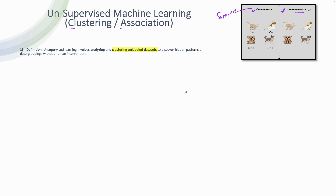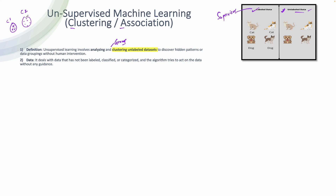The definition says unsupervised learning involves analyzing and clustering unlabeled datasets. Clustering is essentially grouping — you group the data into cluster one and cluster two, where each cluster has similar types of data. You are discovering hidden patterns, because the aim of machine learning is understanding patterns and making predictions — the two Ps. The algorithm tries to act on the data without any guidance.